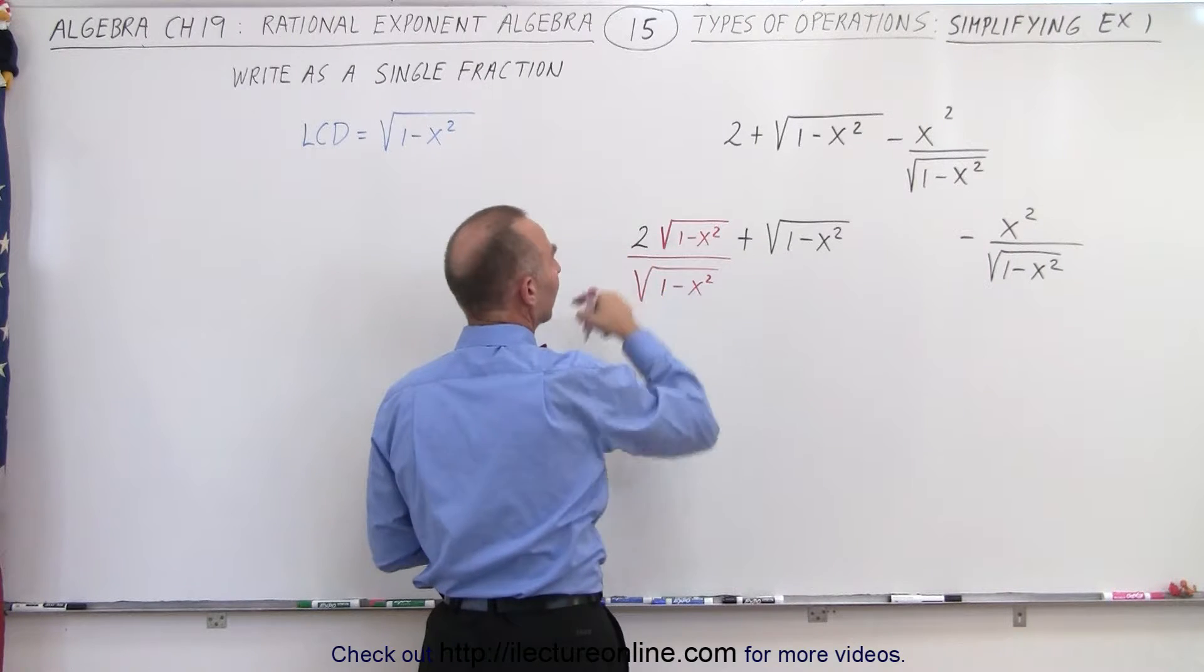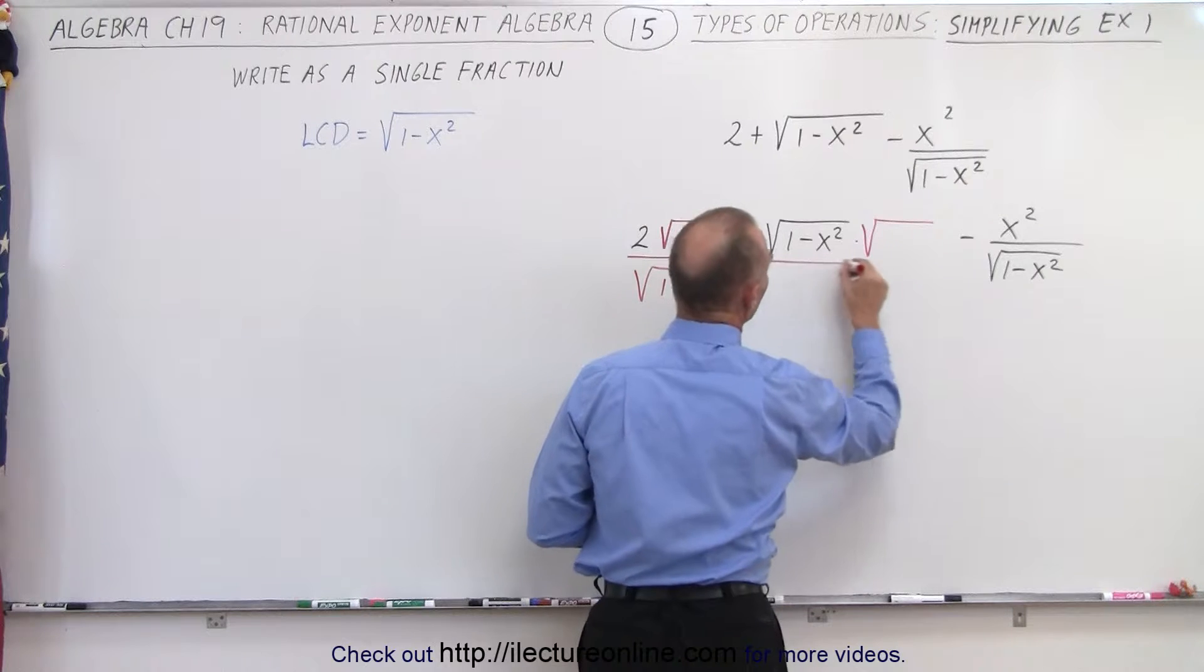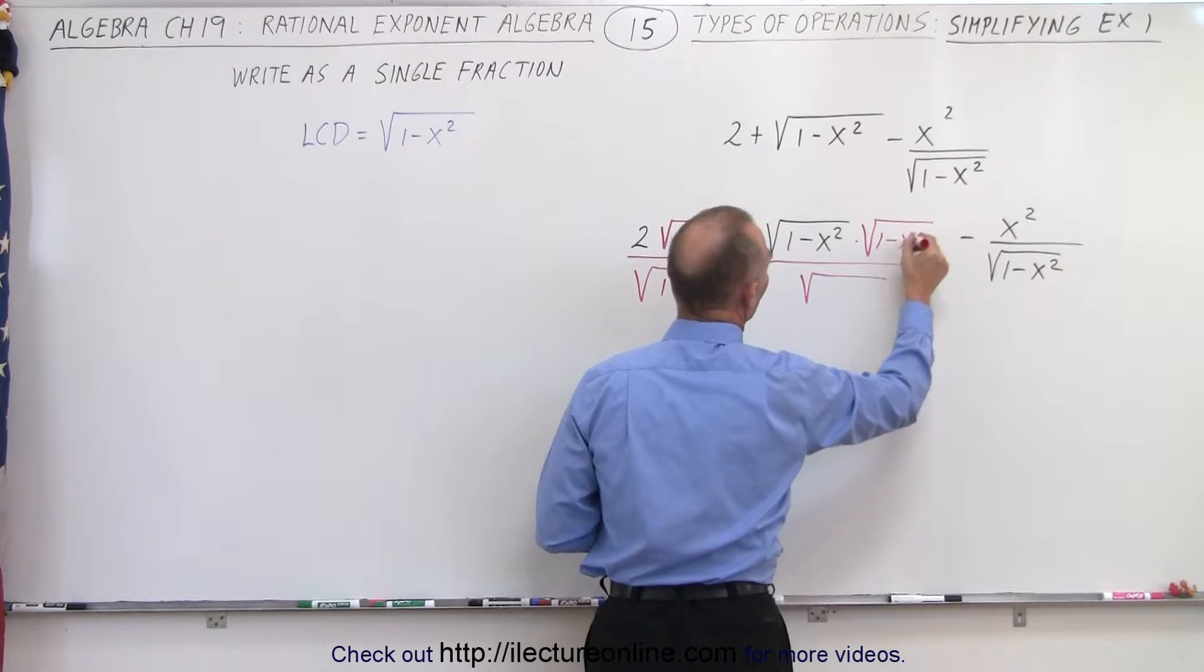Again, when I cancel these out, I get back my original 2. Here as well, I'm going to multiply both the numerator and the denominator by the square root of 1 minus x squared.